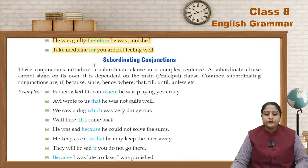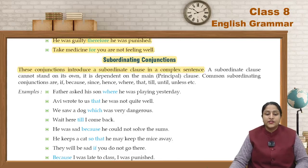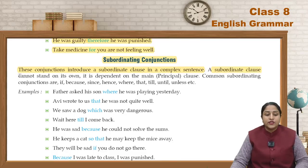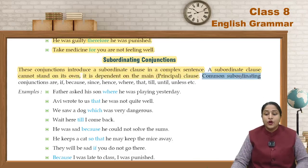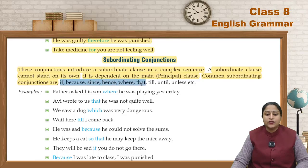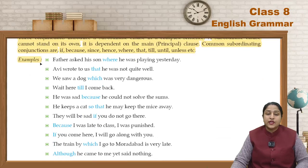Now let's look at Subordinating Conjunctions. These conjunctions introduce a subordinate clause in a complex sentence. The subordinate clause cannot stand on its own — it depends on the main clause. Common subordinating conjunctions are: if, because, since, hence, where, that, till, until, unless, etc. Now let's look at some examples.